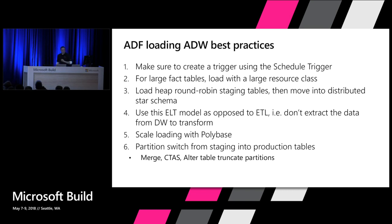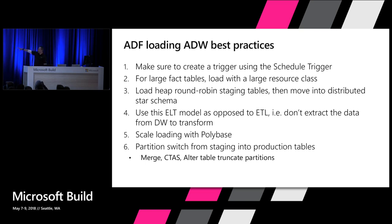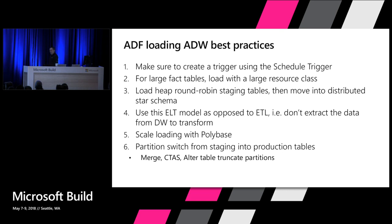To summarize what I showed you: this was an ELT model — extracting and landing, transforming, using PolyBase to scale load. Some recommendations you can take away: optimize your data loading into ADW by using heap tables within ADW, turning off indexes when you load staging tables, and partition switching to move from staging into production star schema tables. I'm going to hand it off to Matt. As a data engineer, I've built that pipeline, refined the data, and handed it off into the warehouse.